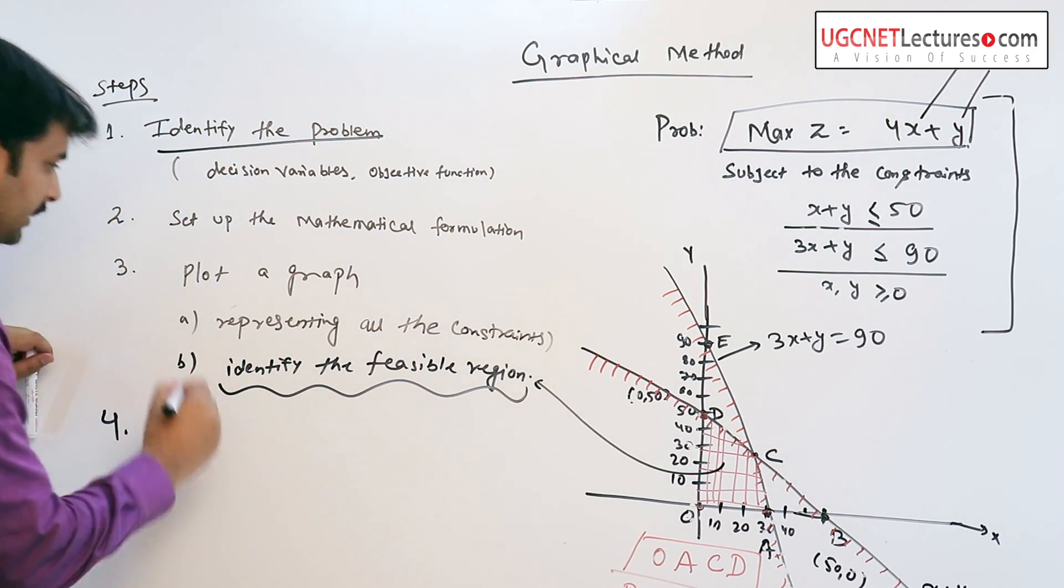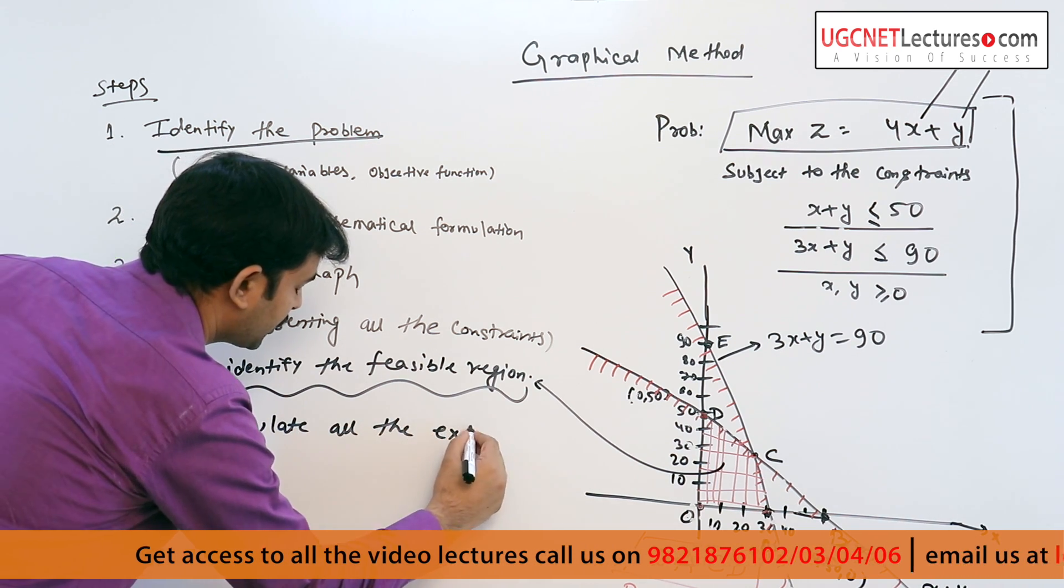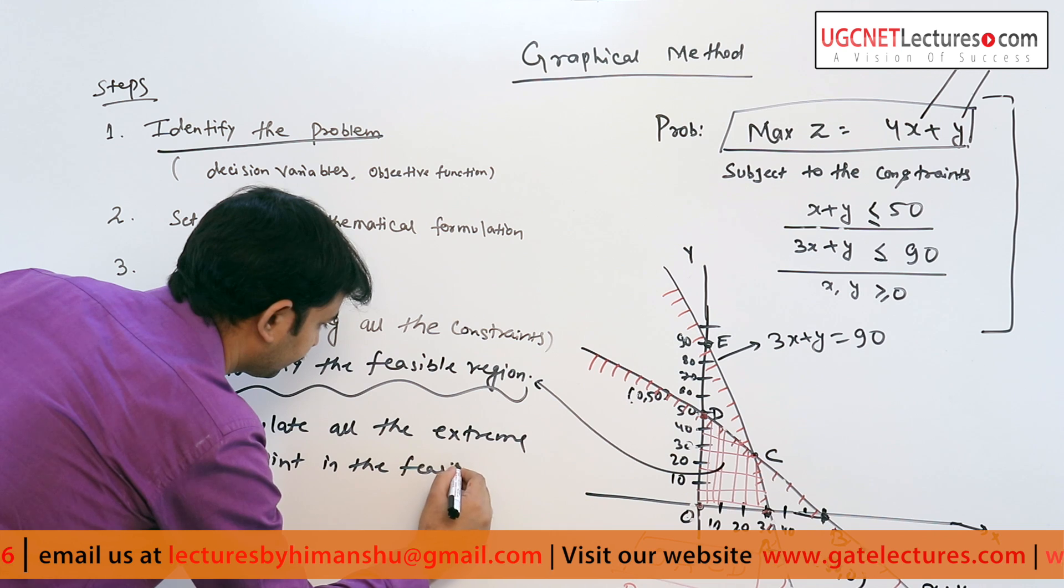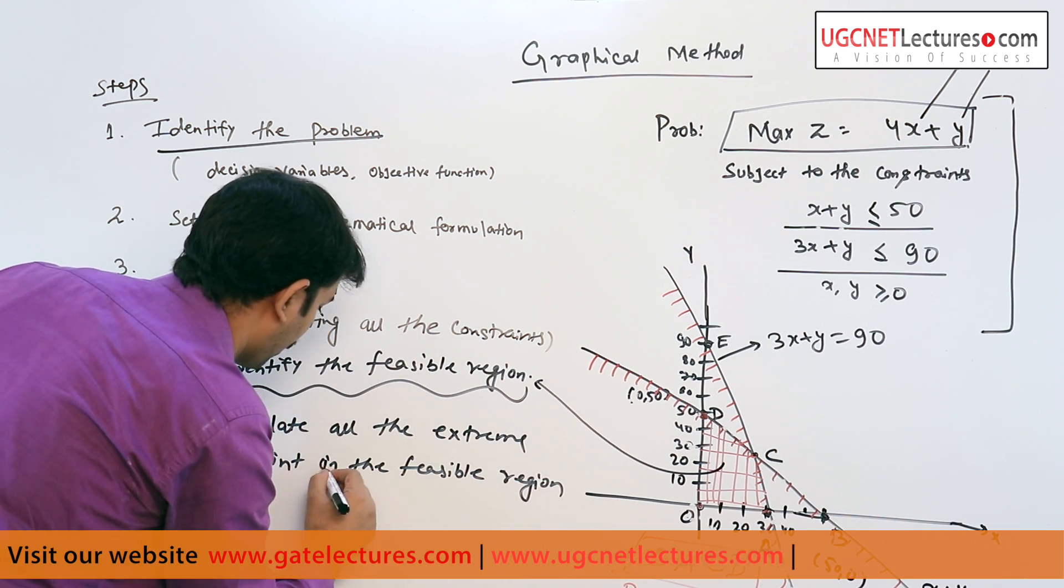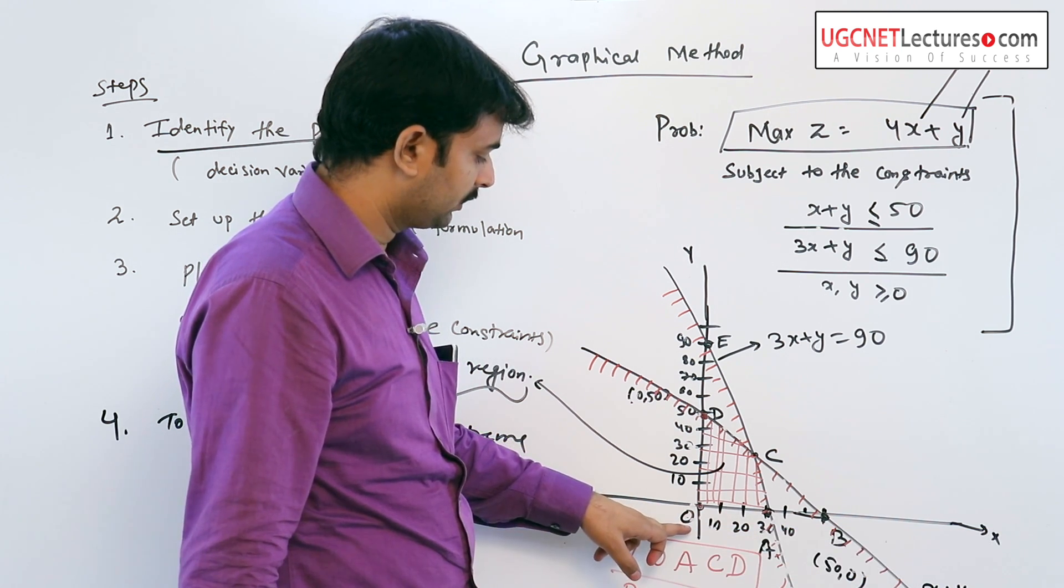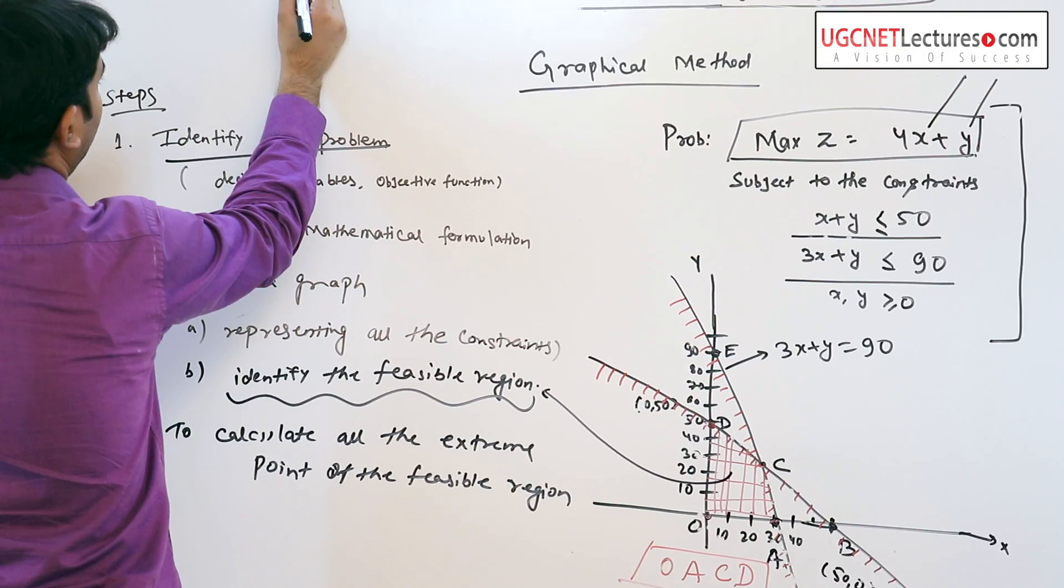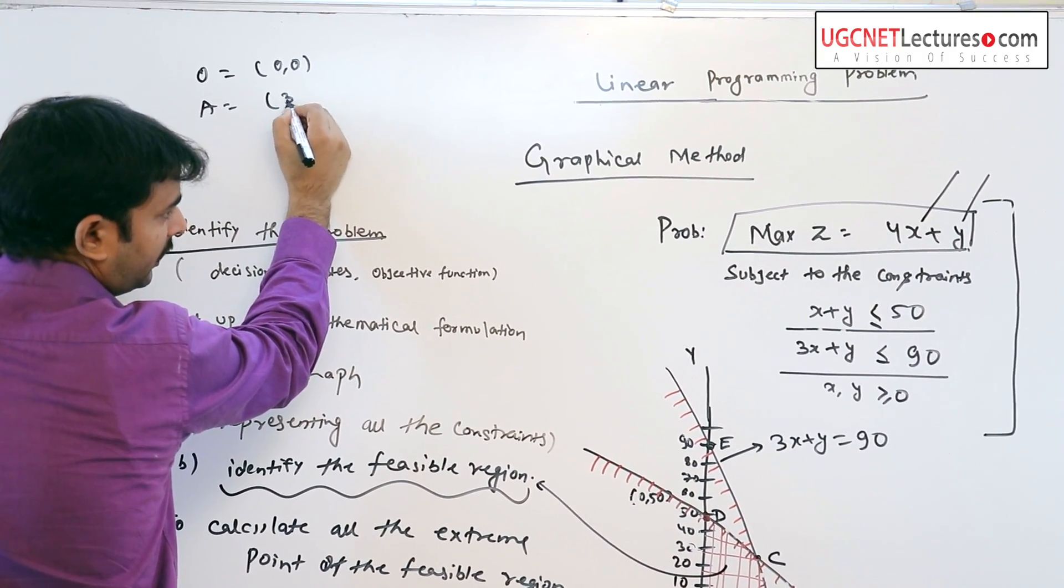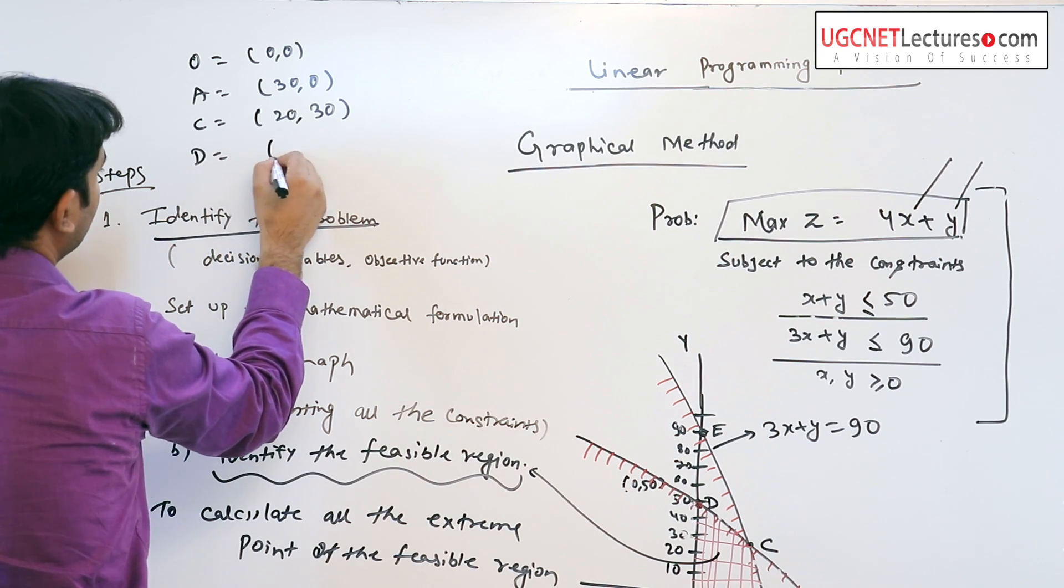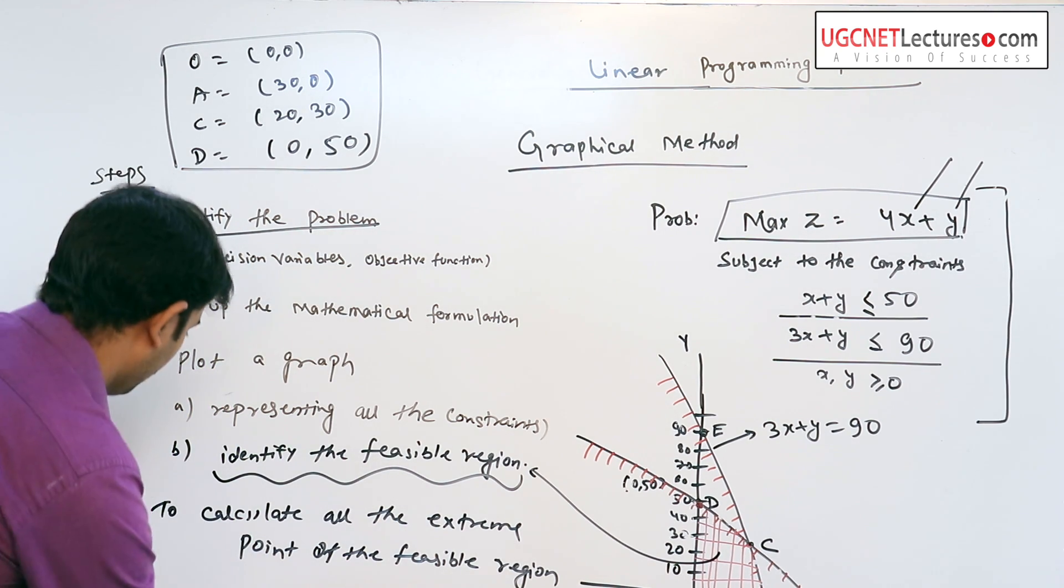Now the fourth step: calculate all the extreme points in the feasible region. The feasible region is OACD. We have to calculate the coordinates of O, A, C, D. Here the coordinate of O is (0,0), A is (30,0), C is (20,30), and D is (0,50).